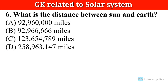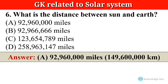Question number six: What is the distance between the Sun and Earth? The correct answer is option A — 9 crore 29,60,000 miles, which is equal to 14 crore 96 lakh kilometers.